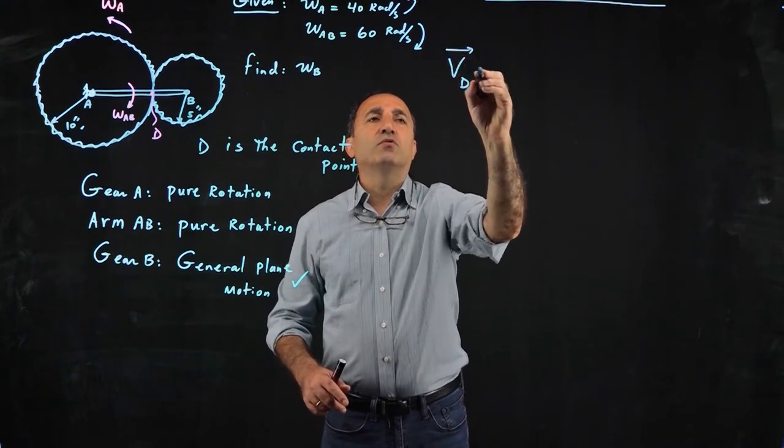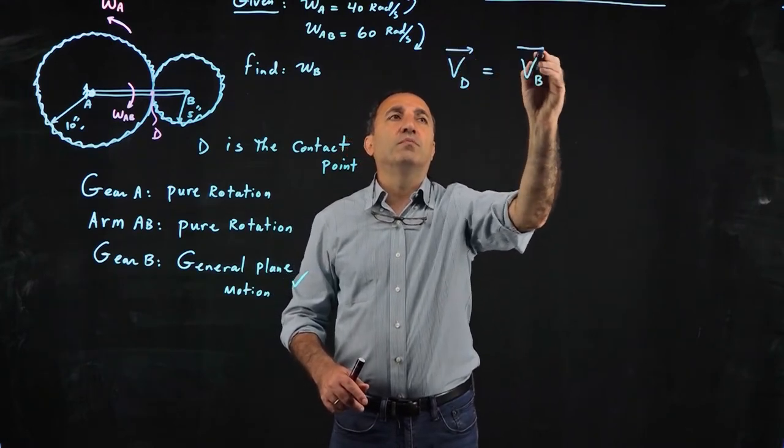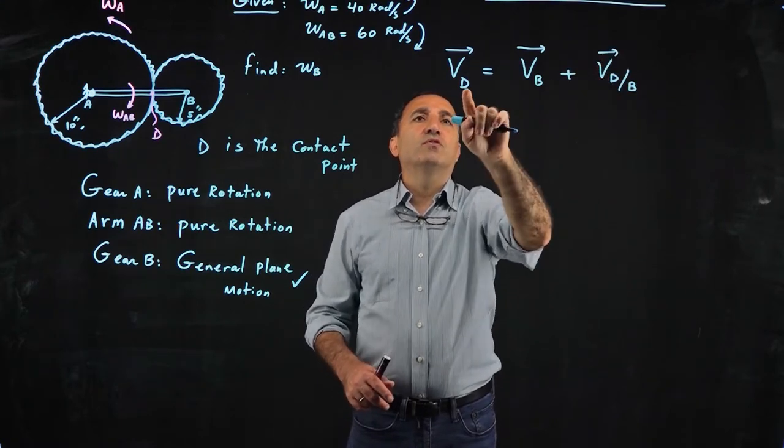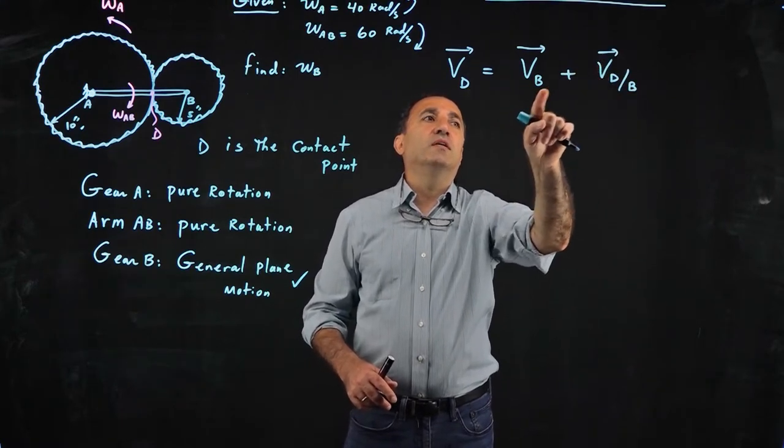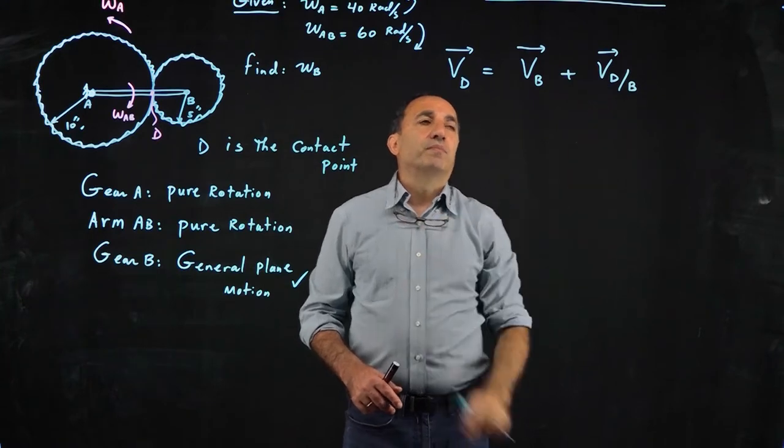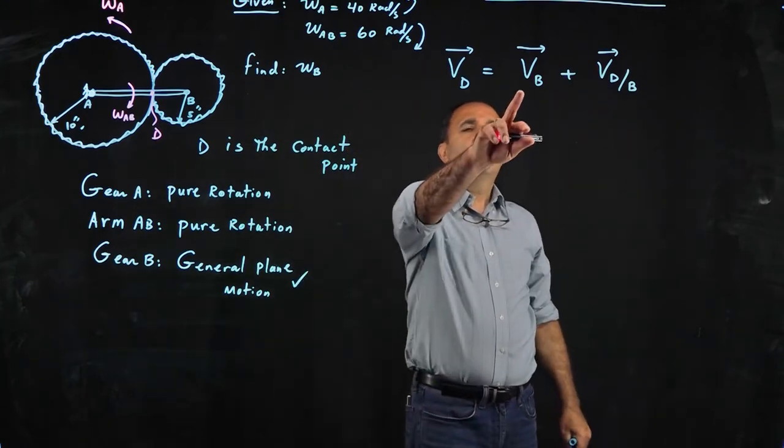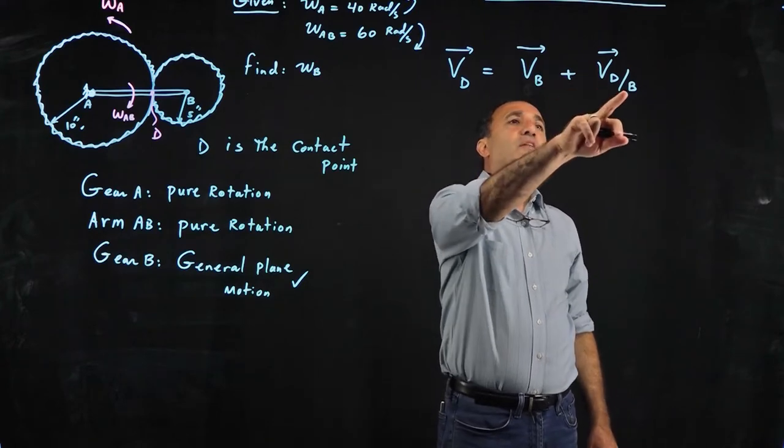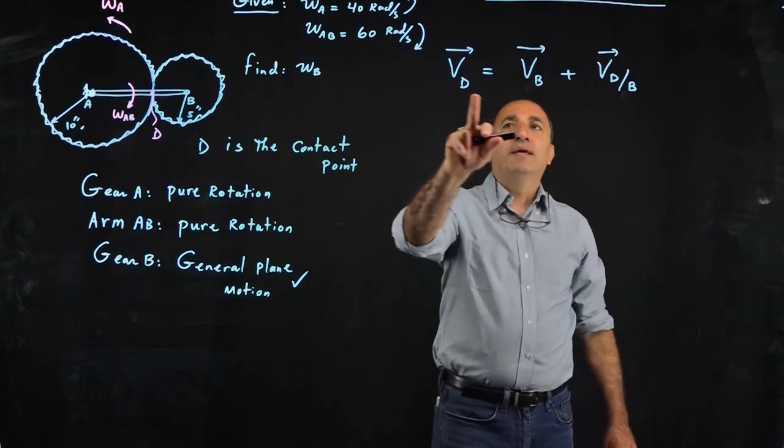So then you could go ahead and write the equation between point D and B for gear B. You could say velocity of D equals velocity of B plus velocity of D relative to B. Or you could switch and put B here and D here. Basically, this equation relative motion means you're translating with B and you're rotating about B.